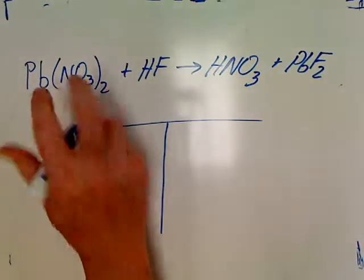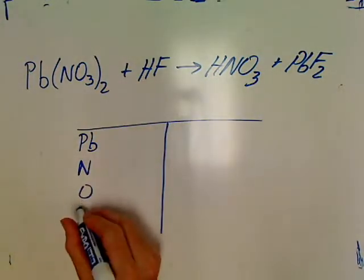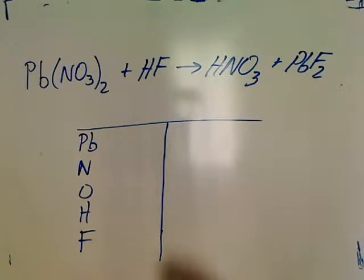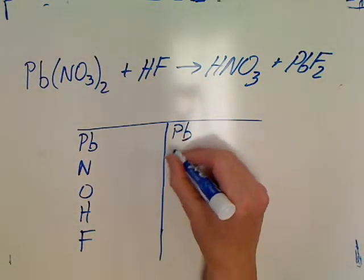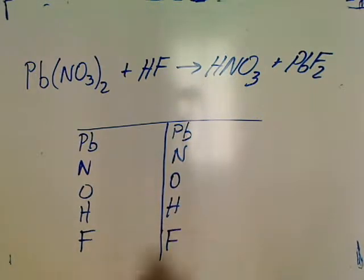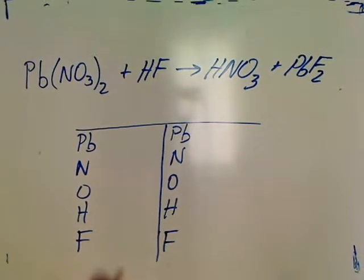P, B, I've got an N, I've got an O, an H, and an F. Whew! I've got to make my T bigger for this one. P, B, N, O, H, and F. So, I've got a lot of work to try and do in this one. So, let's see what I can figure out here with this one. Well, let's start counting.